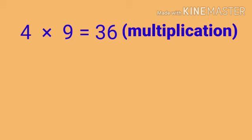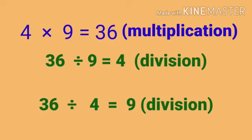4 into 9 equals to 36. This is multiplication. Then again 36 divided by 9 will give you 4. And 36 divided by 4 will give you 9. So observe very carefully. The first one is multiplication statement and the second and third are the division statement.